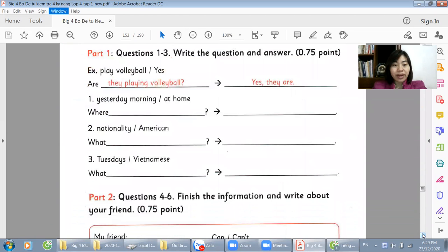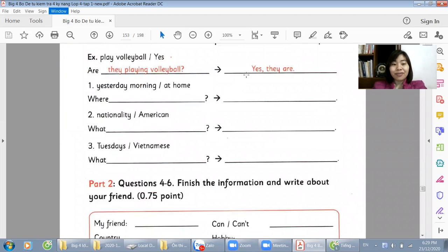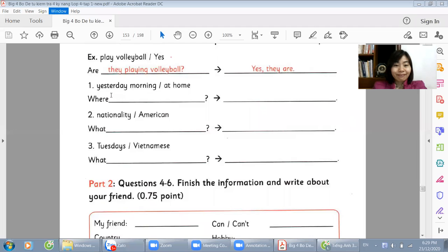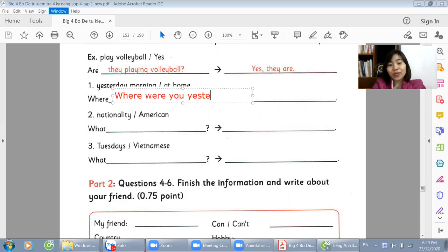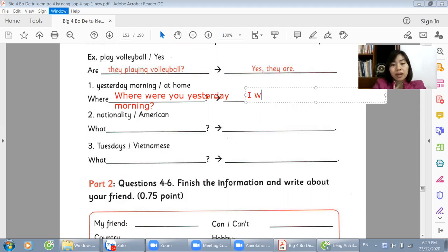Next section, the writing section. Based on the given words, we will write questions and answers. Here we are asking about location yesterday. Yesterday morning. We will ask: Where were you yesterday morning? And the answer is I was at home.